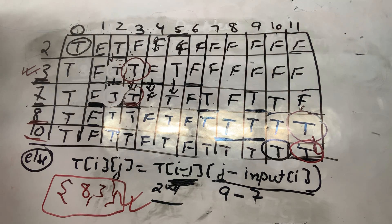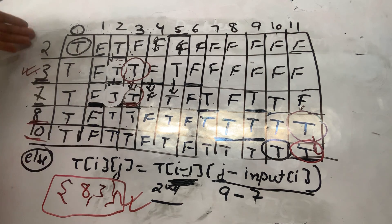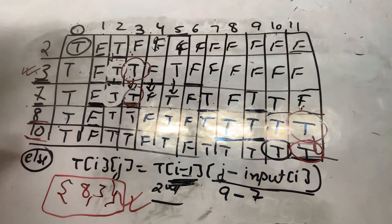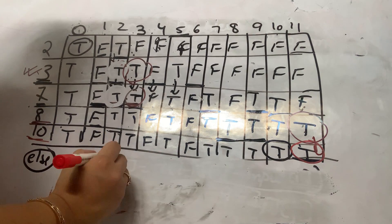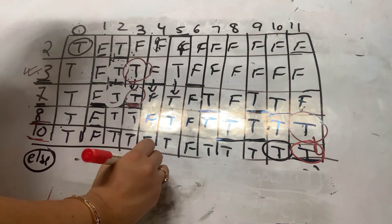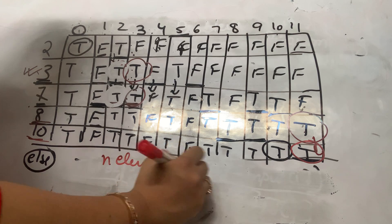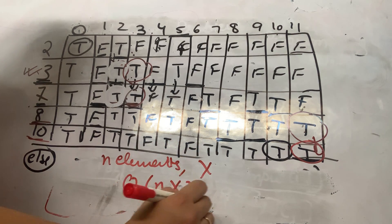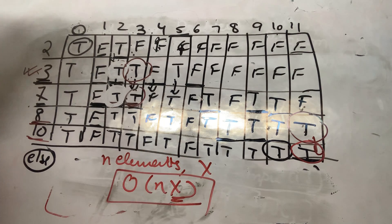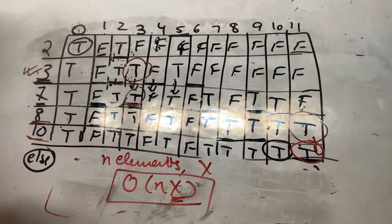This is how we solve the subset sum problem using dynamic programming. The complexity of the approach is the number of elements in the set multiplied by the total sum. If there are n elements and we are looking for sum x, the time complexity is O(n × x). Thank you.